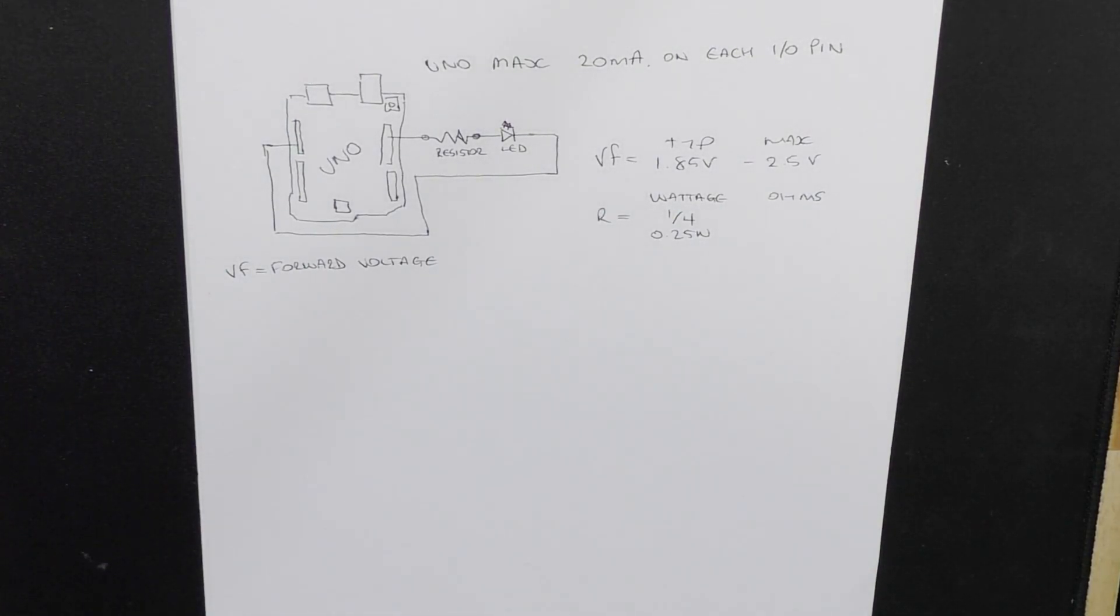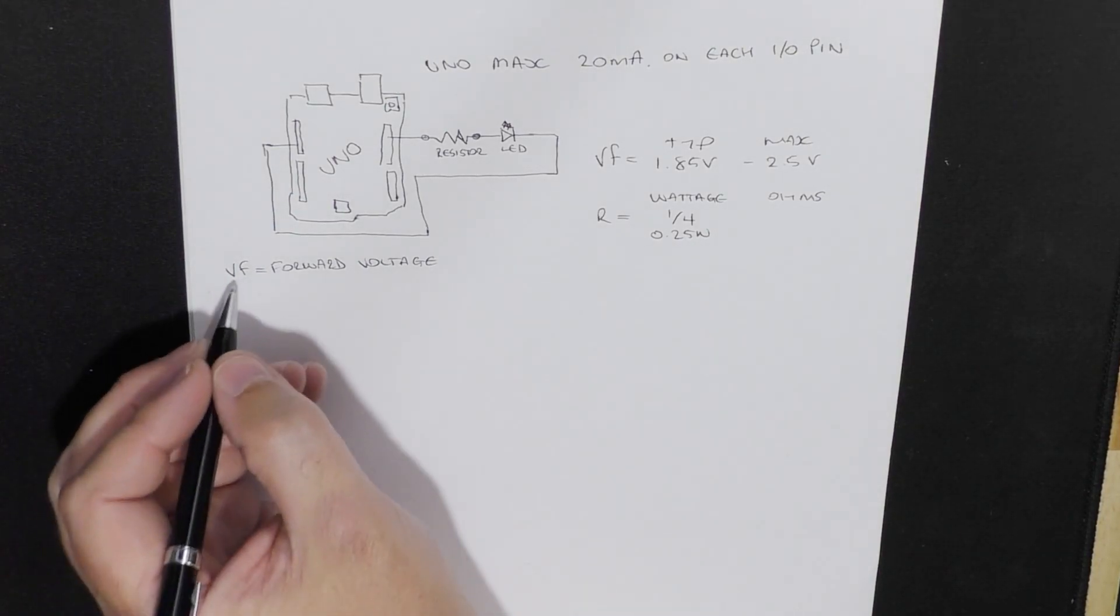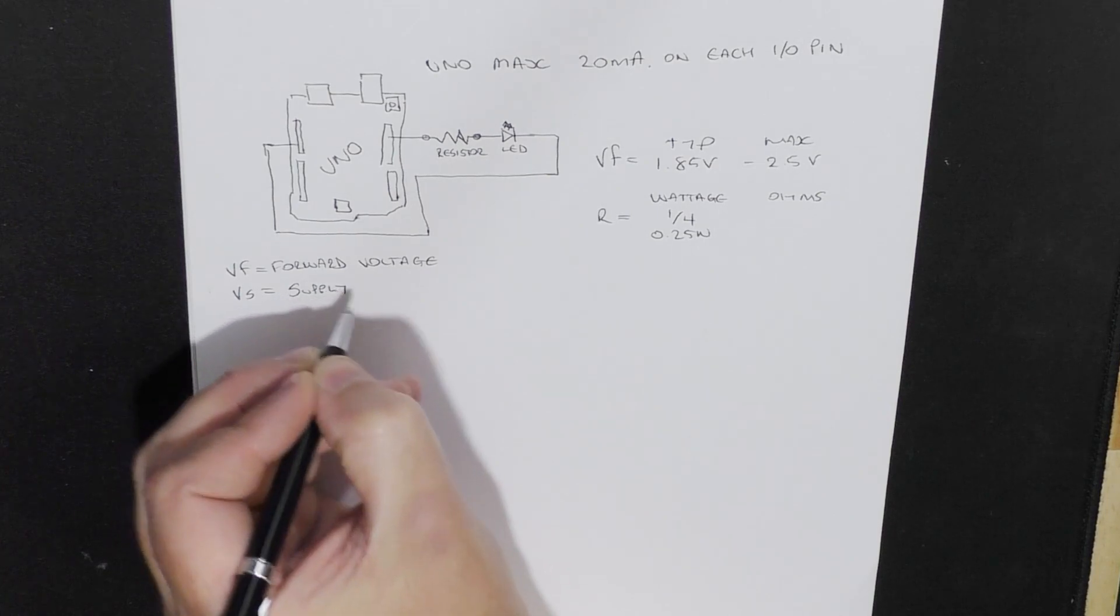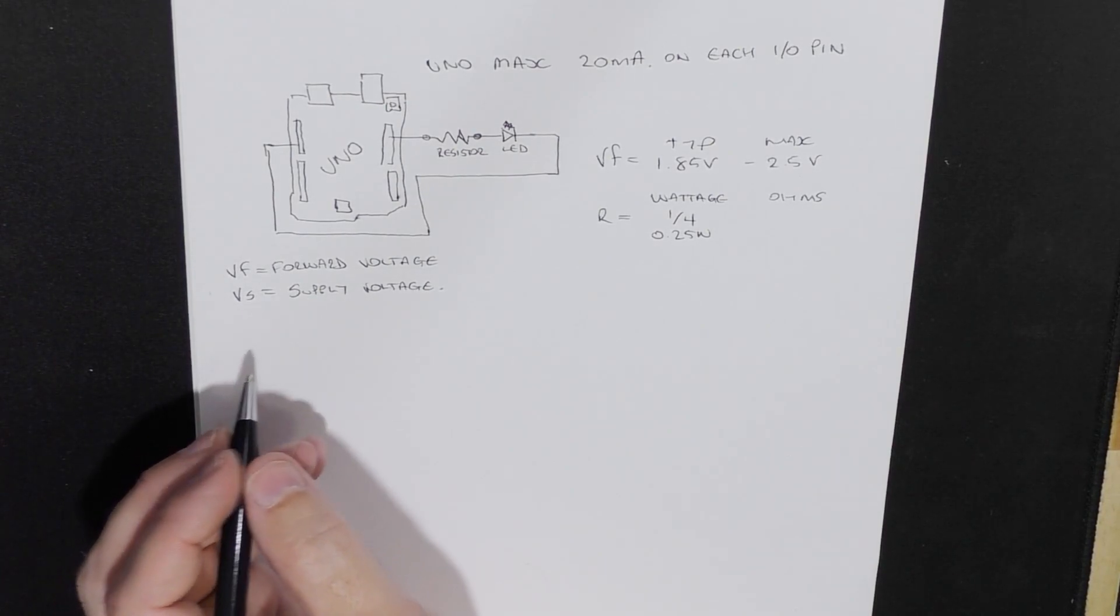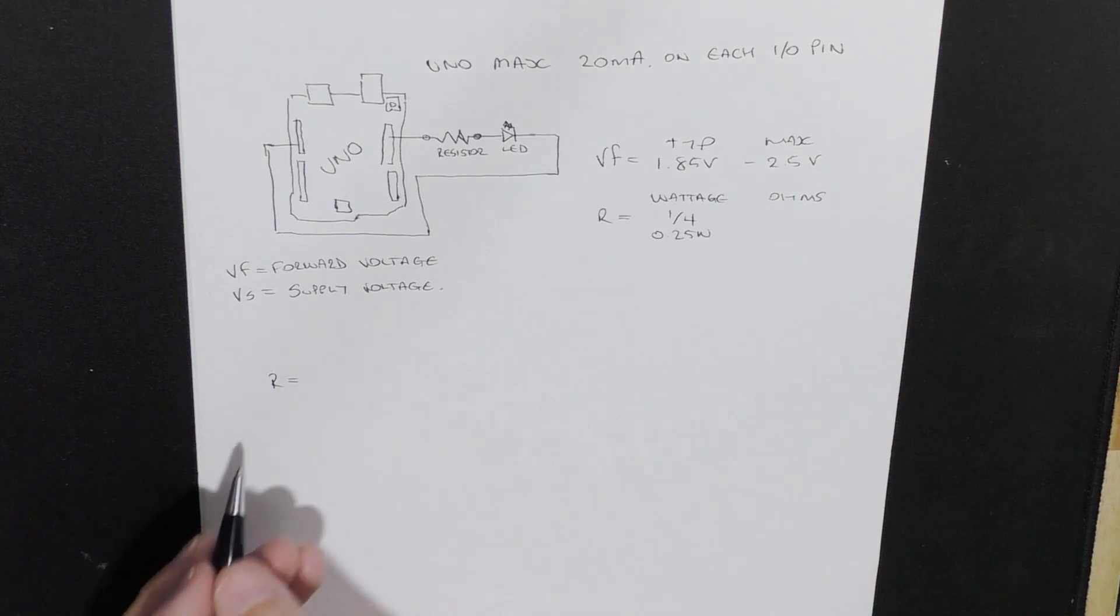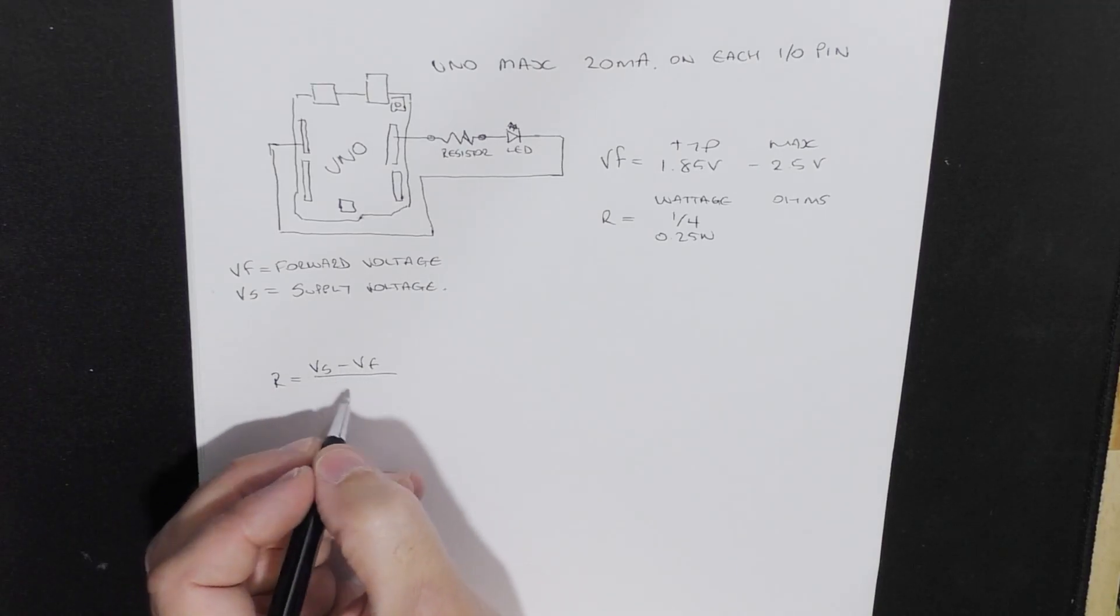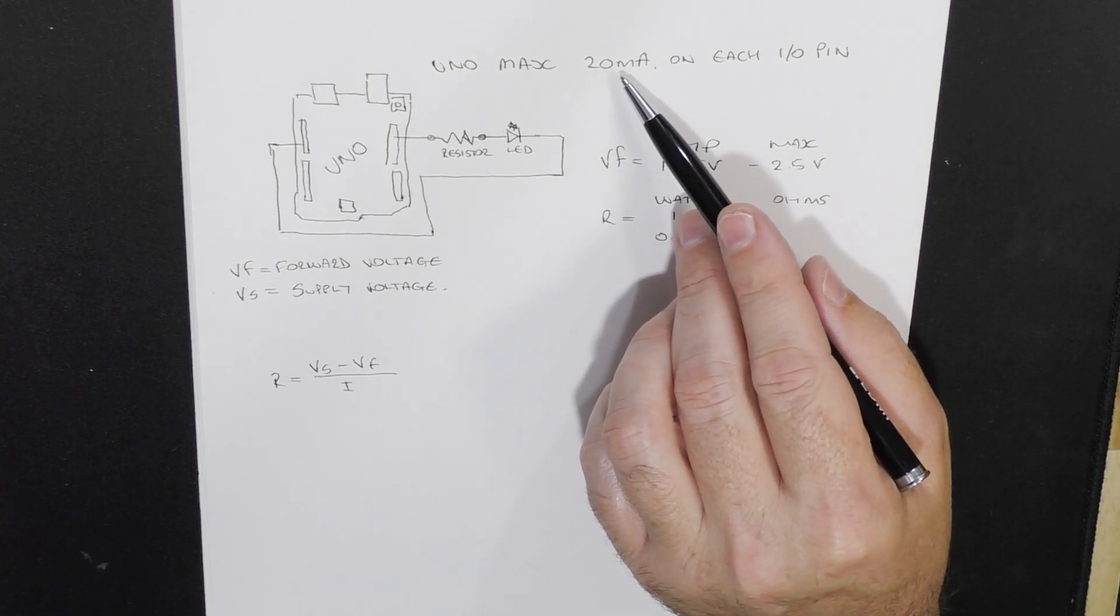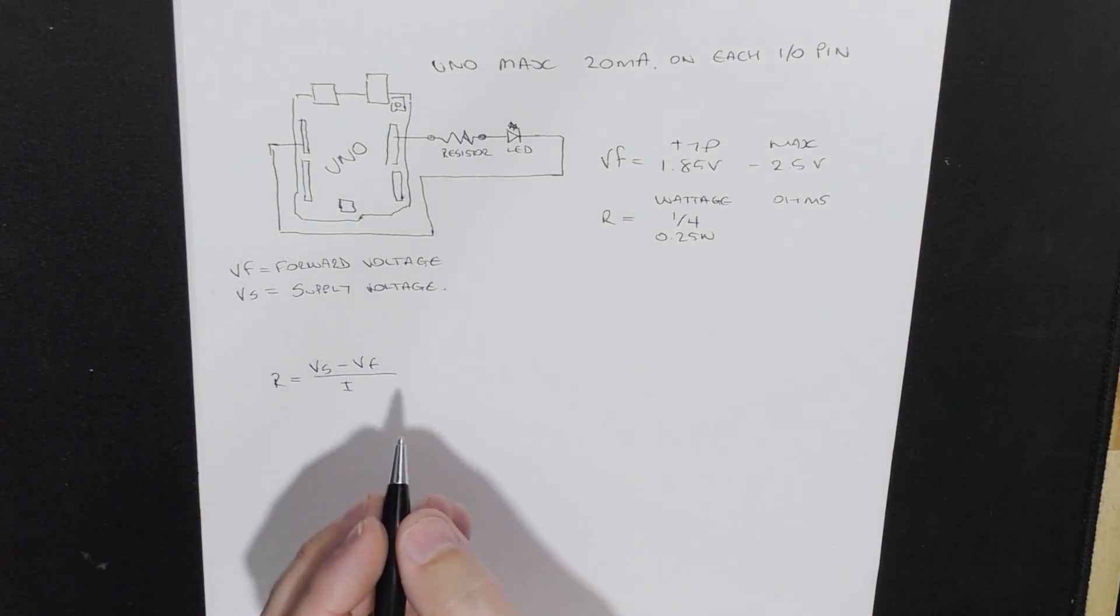Now the formula for finding out what resistance you need is this. So I'll just write there, Vs is supply voltage. So the formula goes like this. Resistance equals Vs minus Vf over the current. Now we know the current maximum is 20 milliamps. So let's give it some headroom and let's make it 0.15 milliamps. 0.15 amps or 15 milliamps.